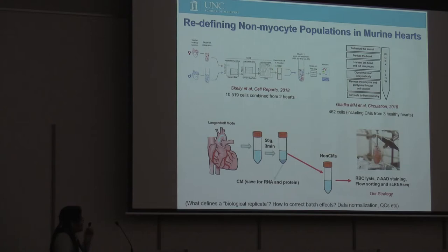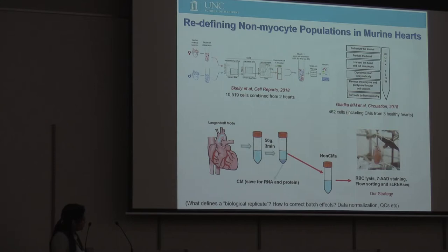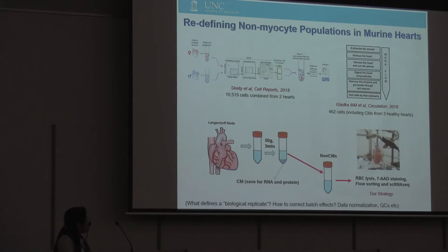After identifying the differences in methodology, we also found a lot of challenges in data analysis and experimental design. For example, what really defines a biological replicate in such an experiment — do you define that as one sequencing run, one heart, or cells pooled from multiple hearts? And also, how to correct for batch effects, and what really constitutes a batch? Related issues include data normalization, QC, and data trimming.